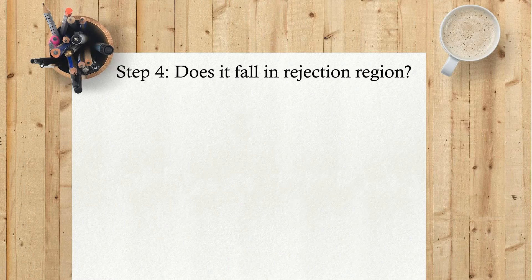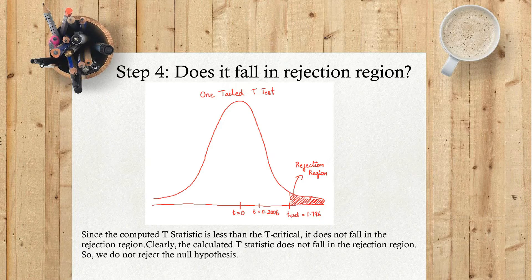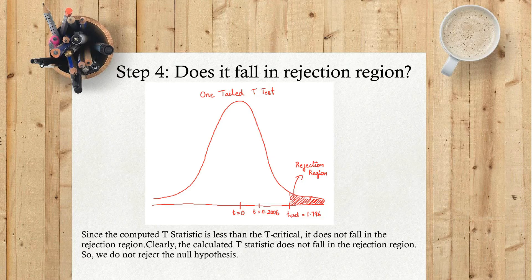Step 4: Does it fall in rejection region? Since the computed t statistic is less than the t-critical, it does not fall in the rejection region. Clearly the calculated t statistic does not fall in the rejection region, so we do not reject the null hypothesis.